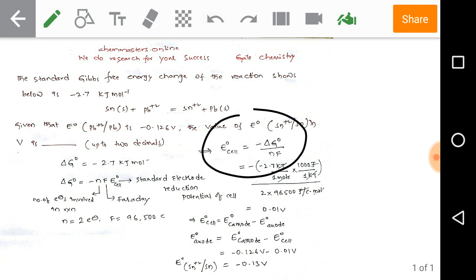Using the formula E⁰cell equals E⁰cathode minus E⁰anode, substitute the values to calculate the answer.